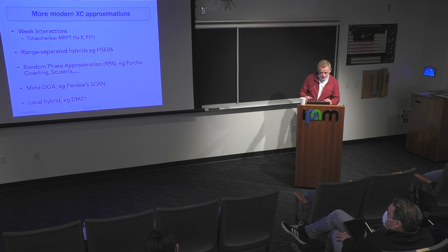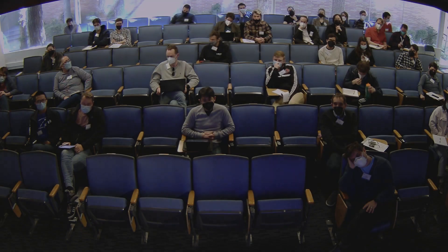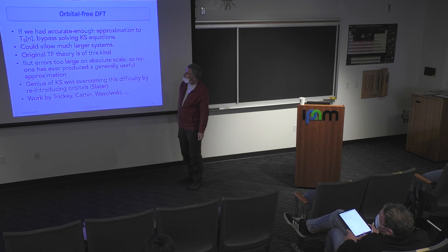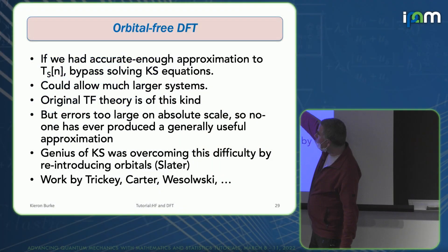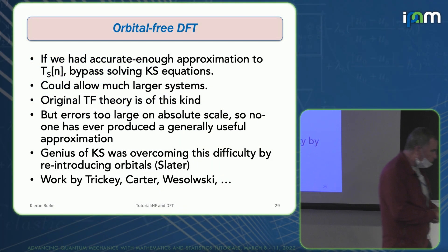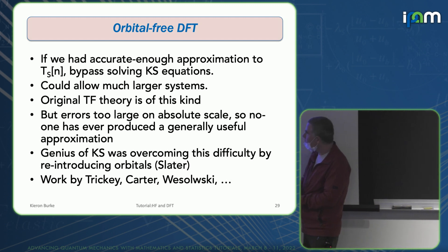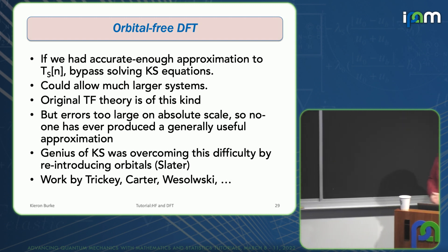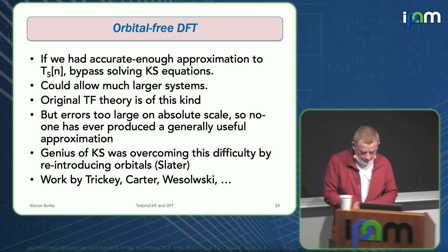Now I'll get into some more specialized things. If we had an accurate enough approximation to the kinetic energy, we wouldn't have to solve the Kohn-Sham equations, just like in Thomas-Fermi theory. Various people are trying to make orbital-free DFT a reality, but there is no general-purpose approach. Part of the problem is that the kinetic energy is such a big fraction of the total energy that you can't afford small mistakes.